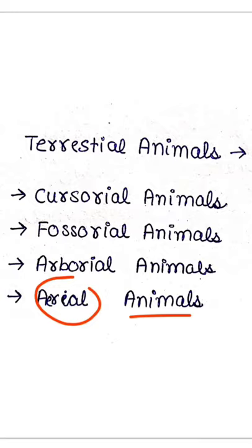So these are the types of terrestrial animals which live on land. I hope you like the video. If you like the video, please subscribe to my channel. Thank you.